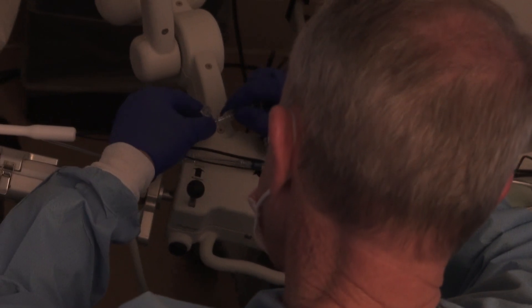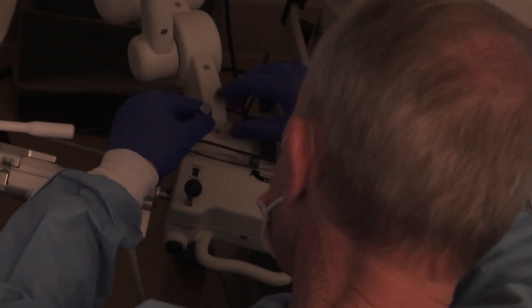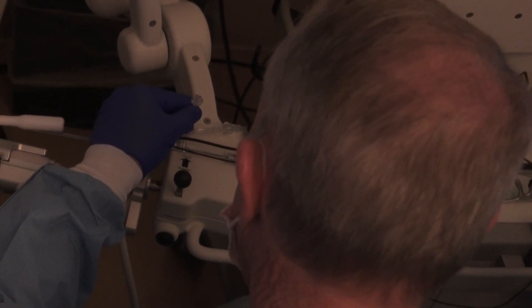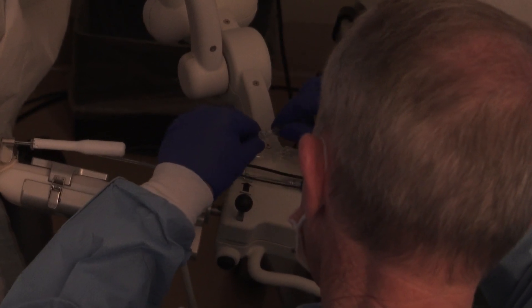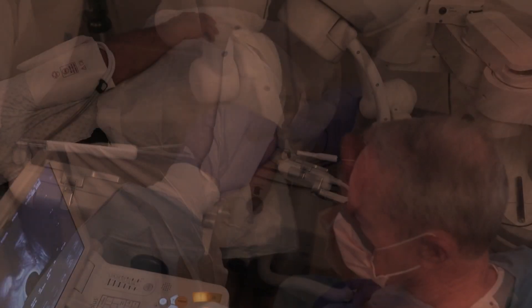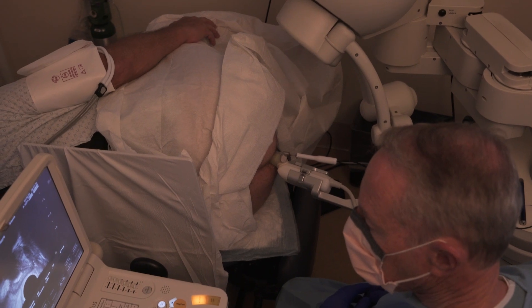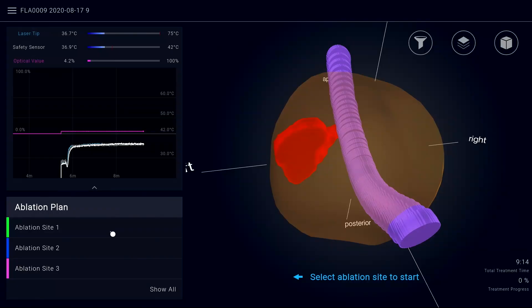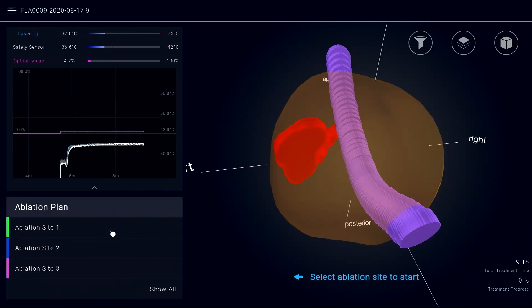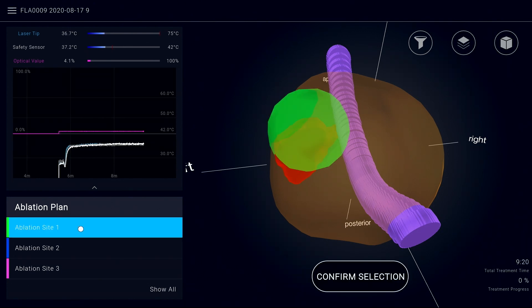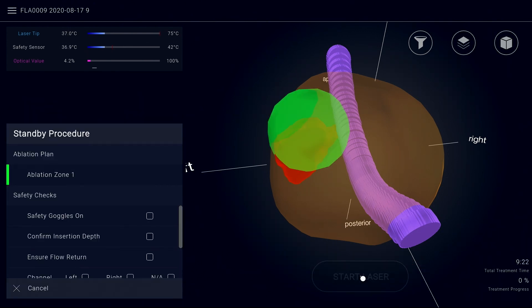Connect the IV tubing from the saline bag to the proximal port on the laser catheter and the return tubing to the distal port on the laser catheter. The operator is now ready to begin the first ablation. On the Orion workstation, select the ablation site that corresponds to the laser catheter position. Confirm the ablation plan selection to begin circulating saline around the laser catheter.